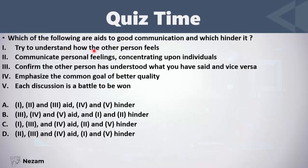Which of the following are aids to good communication and which hinder it? First, try to understand how the other person feels — this will aid good communication. Second, communicate personal feelings concentrating upon individuals — this will hinder communication. This is the wrong thing to do; you should not communicate personal feelings. You should be neutral and fact-focused.